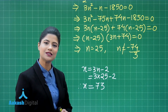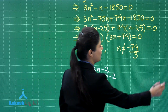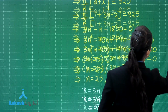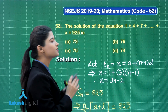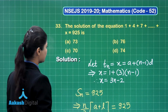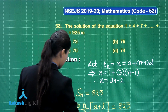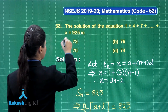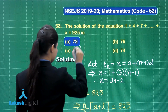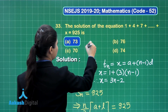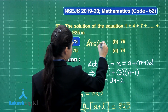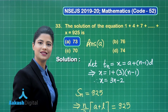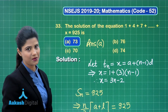This is the required solution for the equation. Out of the four options provided, the solution of this given equation is 73, which is present in option number A. So the required answer for this question is option A. I hope it is clear. Let us take up our next question.